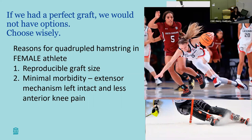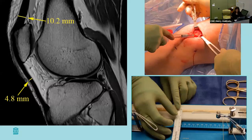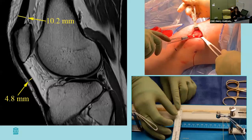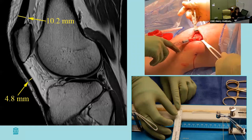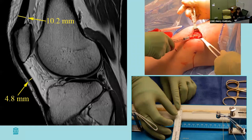You've got to think about how you're going to get that graft, especially in a small female athlete. A quadrupled hamstring is reproducible, has minimal morbidity, and leaves the extensor mechanism intact. I don't exclusively use hamstrings, but I think you have to have this technique in your armamentarium when you're taking care of female adolescent athletes.